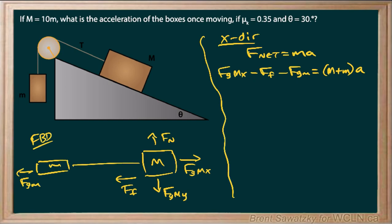All right, so let's start filling those in. For our Fg we can say big Mg sine 30, and then minus, and in this case we have Mu, and we'll go through the two-step approach here, and then minus Mg, and we have our M plus M A on the right-hand side.